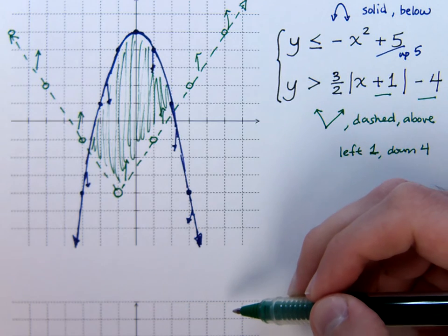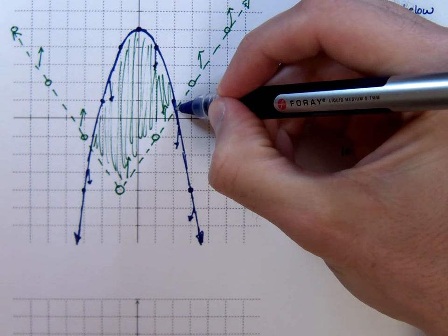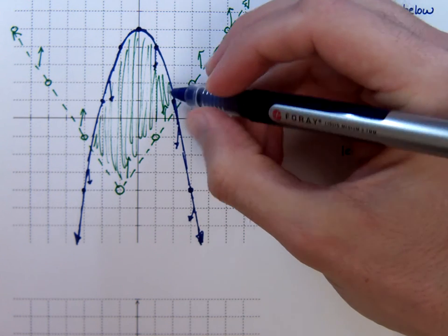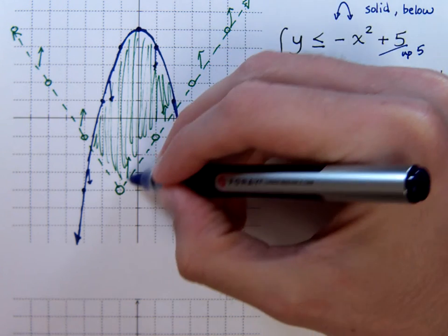Well, to be above the green and below the blue is going to be this section right in here. And that's it. Now, we do have to make sure that we know what happens where these graphs intersect. At the intersection points, I do not get to include that.